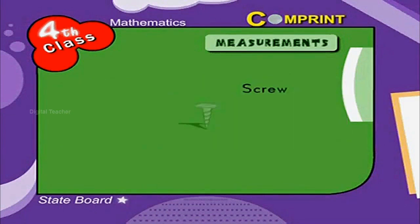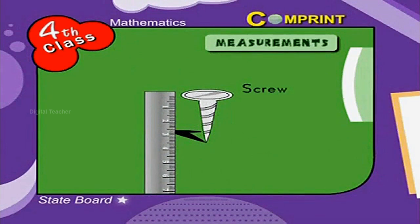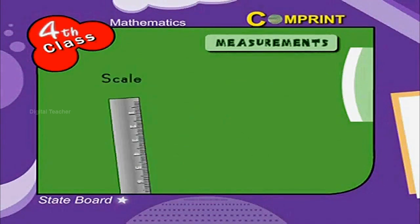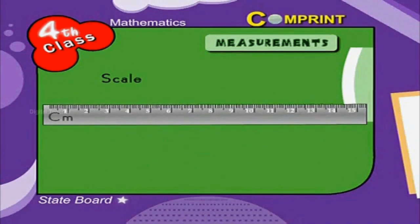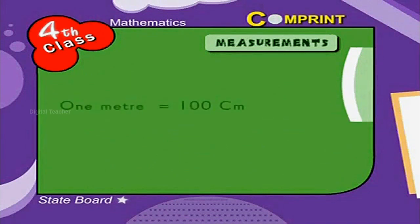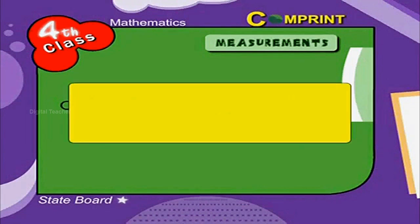For example, to measure a screw — that is, to find out the length of a screw — we use a scale. The scale is marked in centimeters. 1 meter is equal to 100 centimeters. 1000 meters is equal to 1 kilometer.